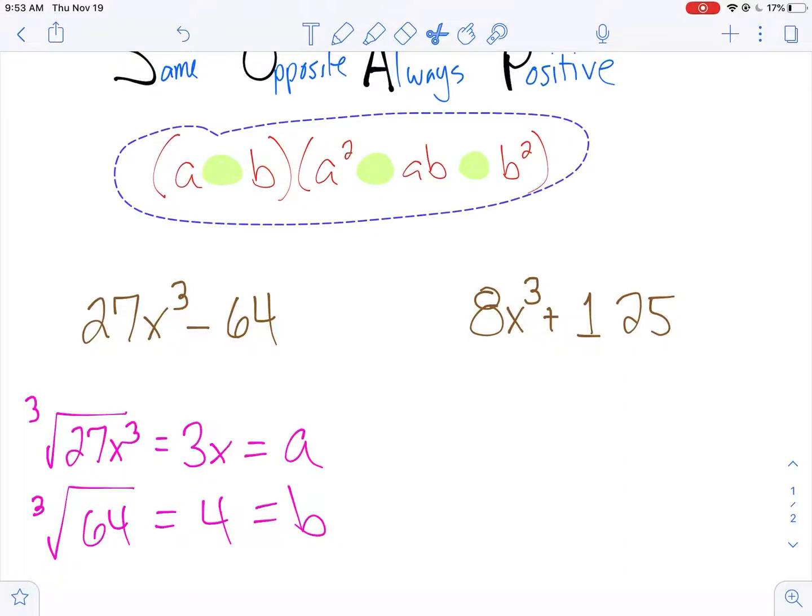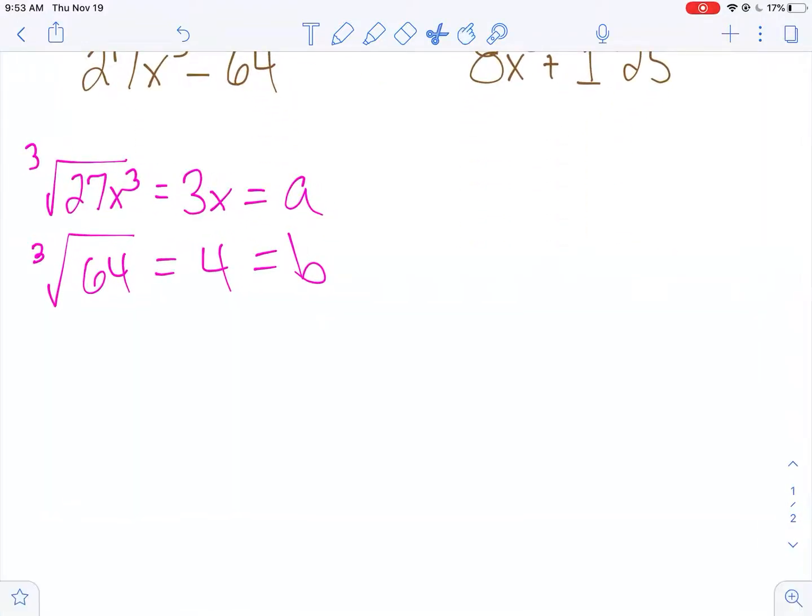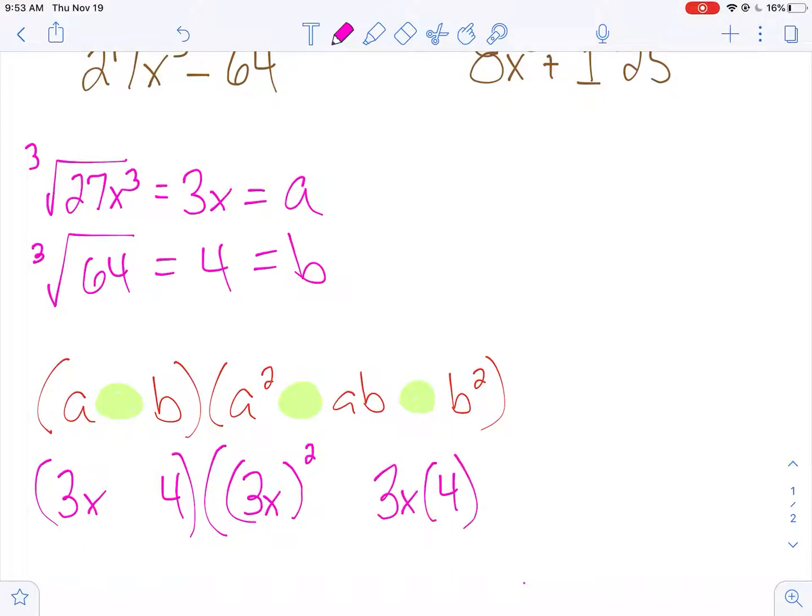Now all I have to do is basically fill in the blanks. I'm going to take my formula and pop it down here. For a I have 3x, for b I have 4. Now this would be 3x squared, bear in mind, make sure you're squaring that whole thing. I would have a times b, which would be 3x times 4. And then I have b squared, which is 4 squared.